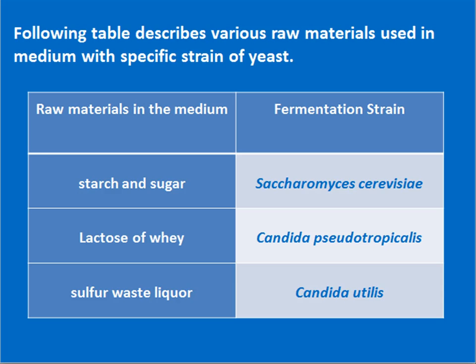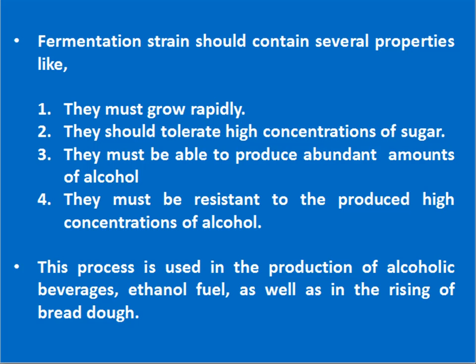Whenever starch and sugar are utilized as raw material, Saccharomyces cerevisiae will be utilized as the fermentation strain. In the presence of lactose from whey, Candida pseudotropicalis is utilized, and whenever sulfite waste liquor is there as a raw material, Candida utilis is useful. Fermentation strains should contain several properties: they must grow rapidly, tolerate high concentrations of sugar, produce abundant amounts of alcohol, and be resistant to high concentrations of alcohol produced.